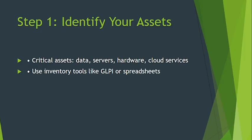Let me show you how to identify your assets in detail. First, you need to list all your hardware — servers, routers, workstations. Then list your software and applications, such as a CRM, CMS, or operating system. After that, list critical data like customer information and financial records. Finally, identify any third-party or cloud services used by the company.